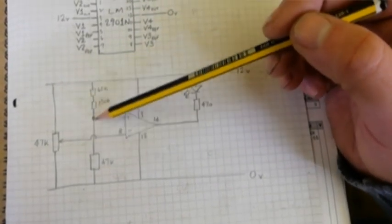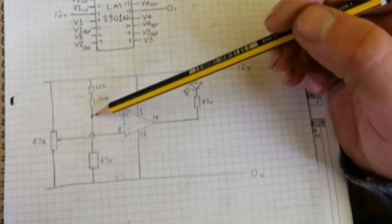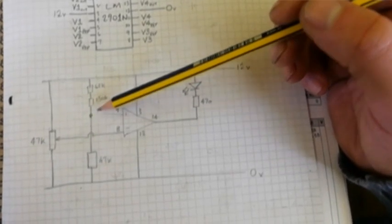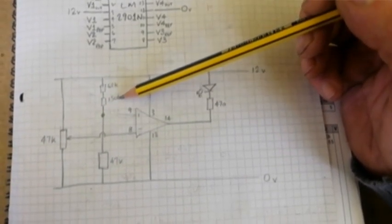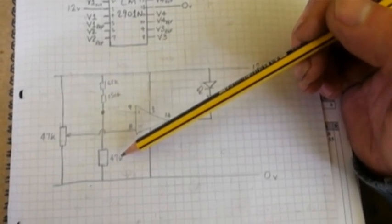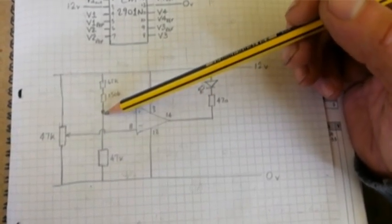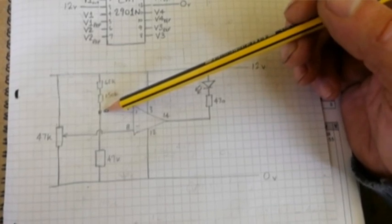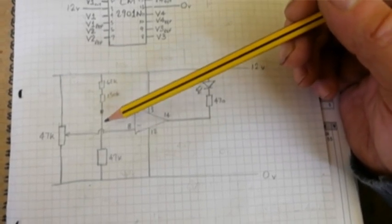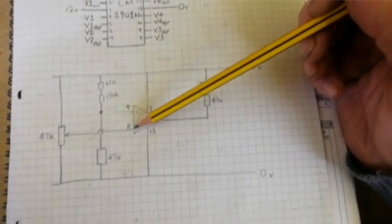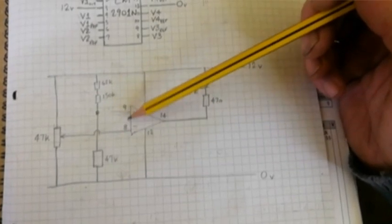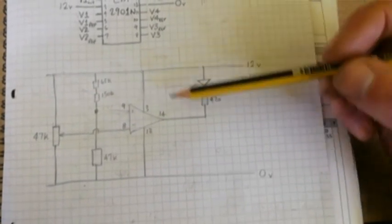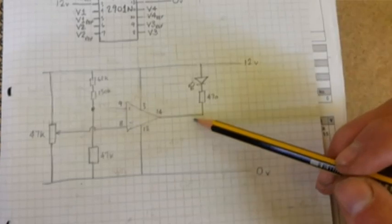This is the reference voltage - 218 kilohms here, 47 kilohms here - which makes this voltage point approximately 2.2 volts. When these two values are the same, current is allowed to flow.